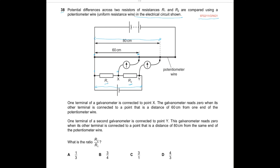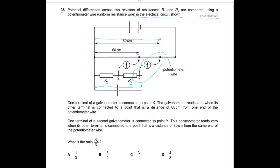From these two balance conditions we have to calculate the ratio R2 by R1. First, let us consider just this part of the circuit without the other part — so this part will be like this.